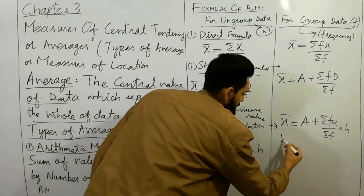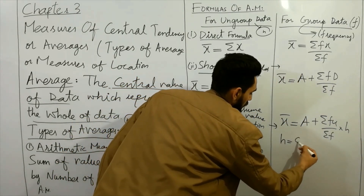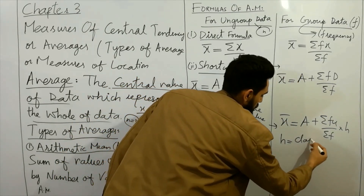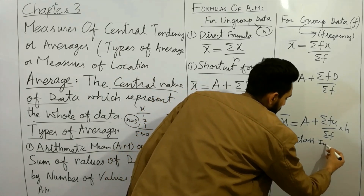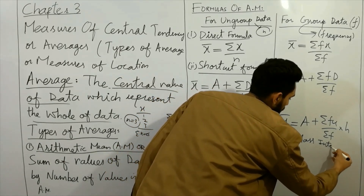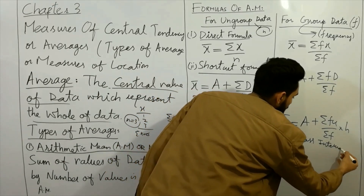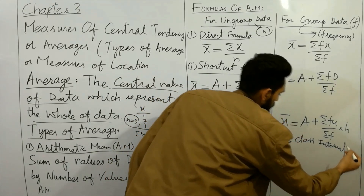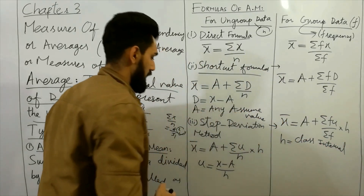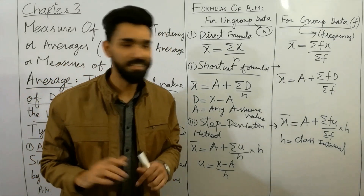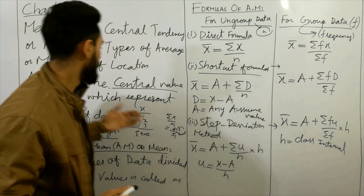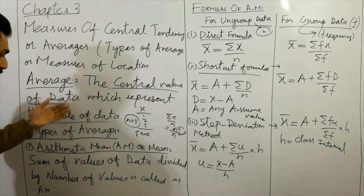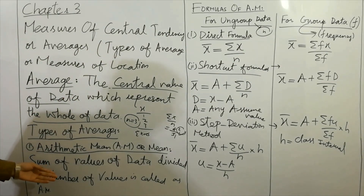Here, H is the class interval. I hope the points are clear — what is the average, and what are the types of averages.